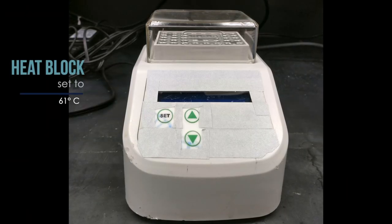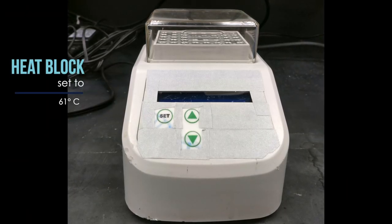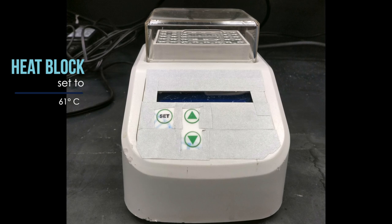The first thing we do is set the heat block to 61 degrees Celsius. Switch on the power in the back and hit the set button.